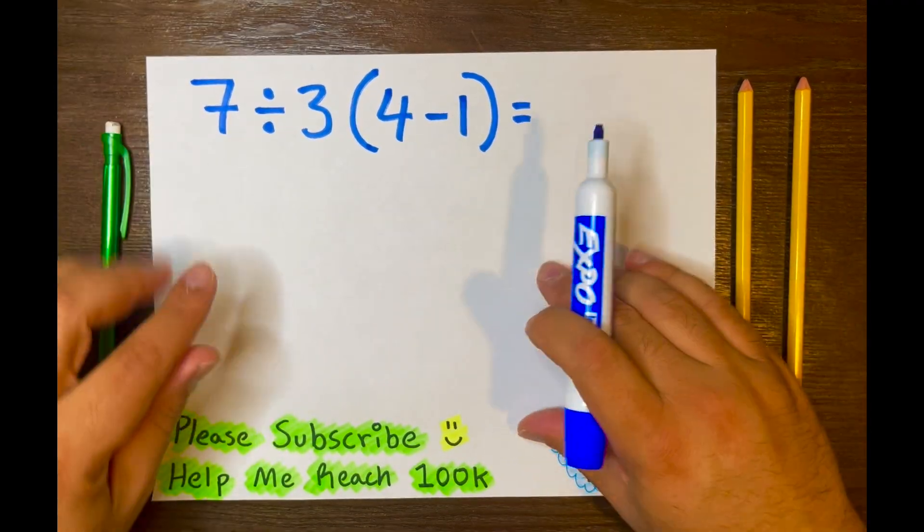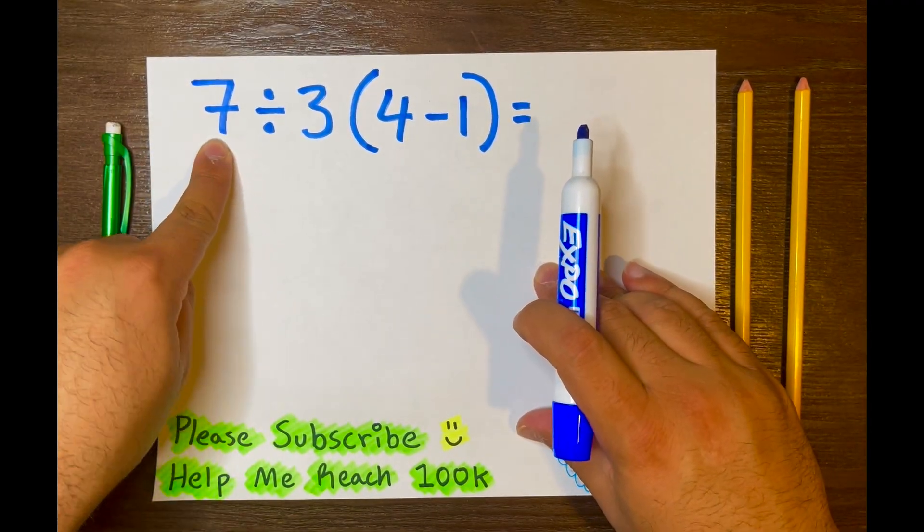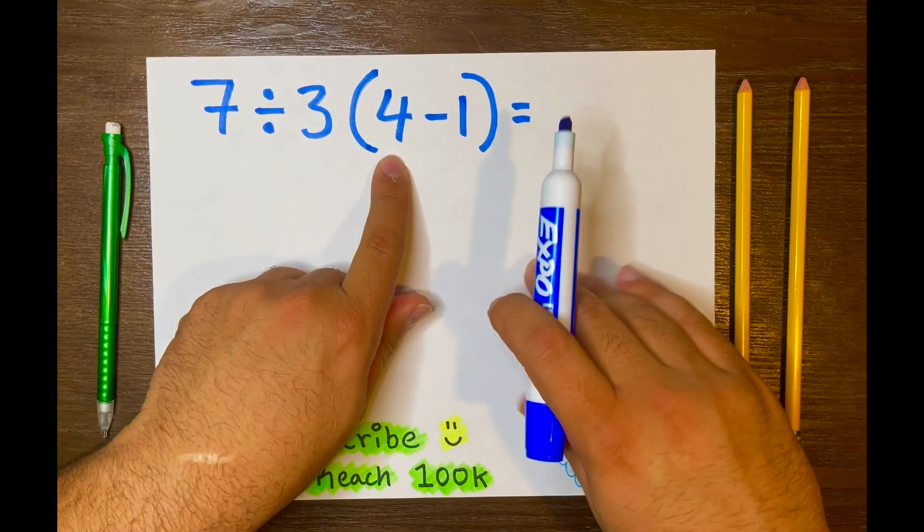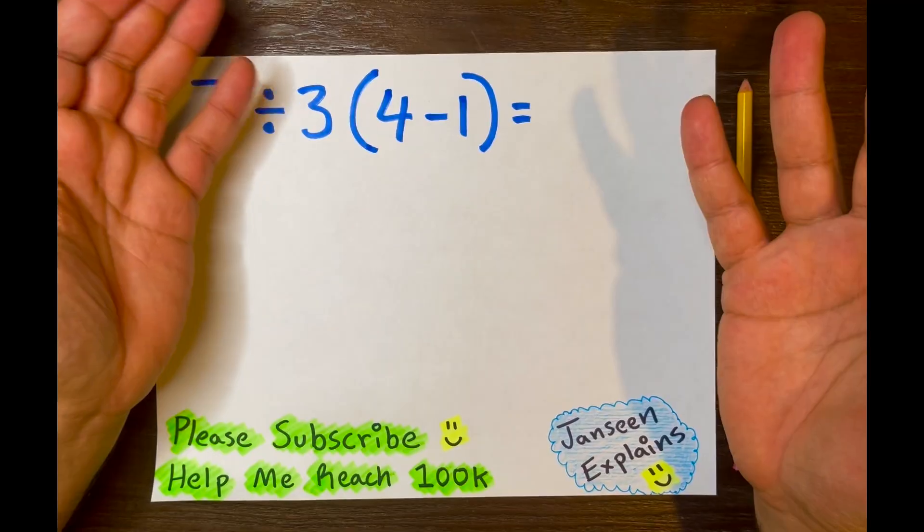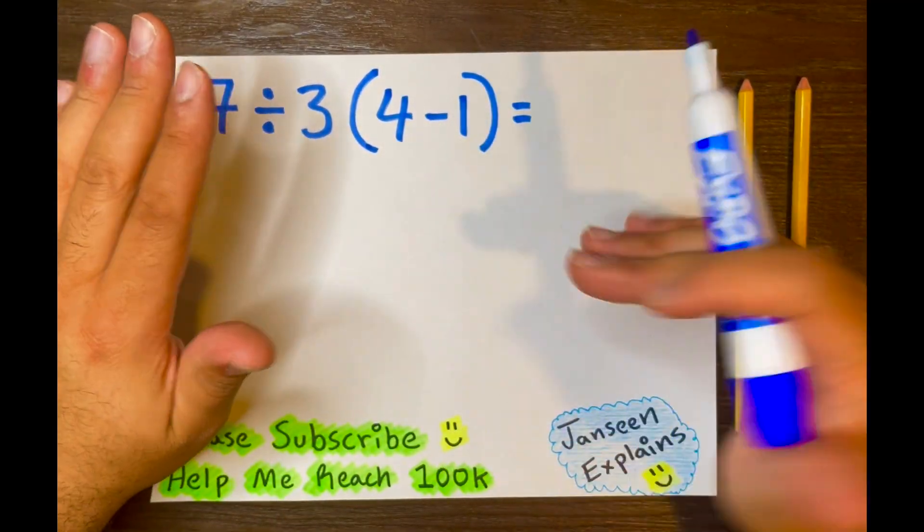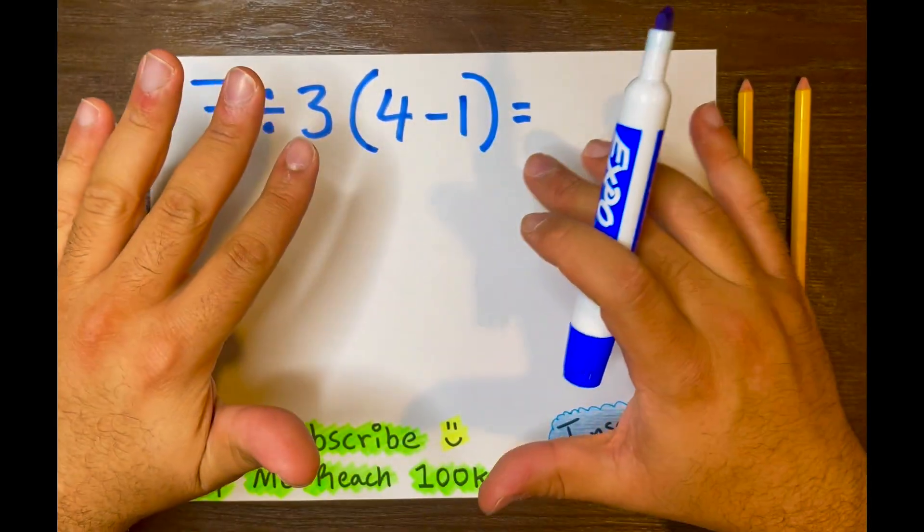Hi everyone, by the end of this video you will be able to solve 7 divided by 3 and then you have 4 minus 1 inside these brackets or in other words parentheses. And if you have not subscribed to the channel, please subscribe to the channel.